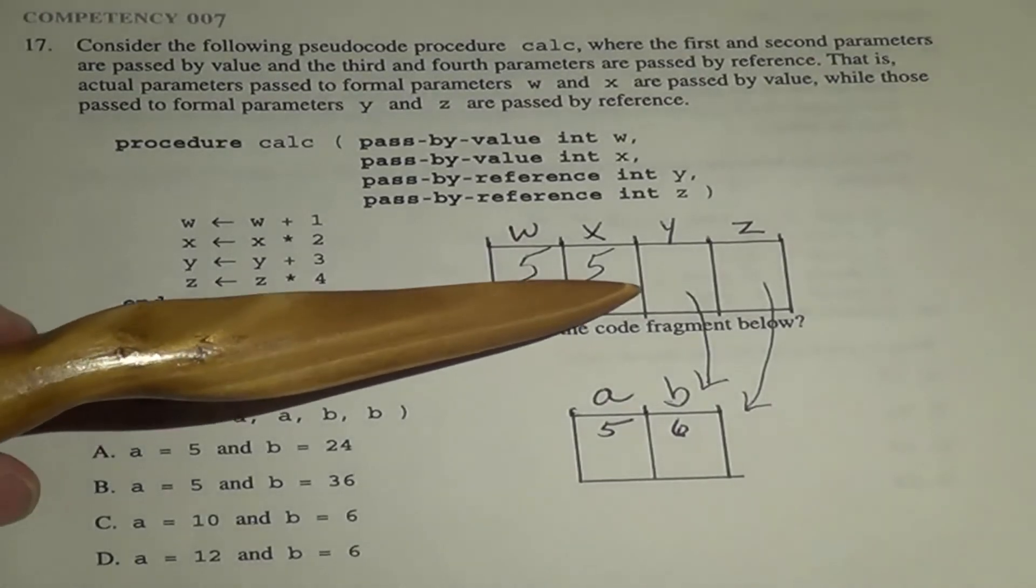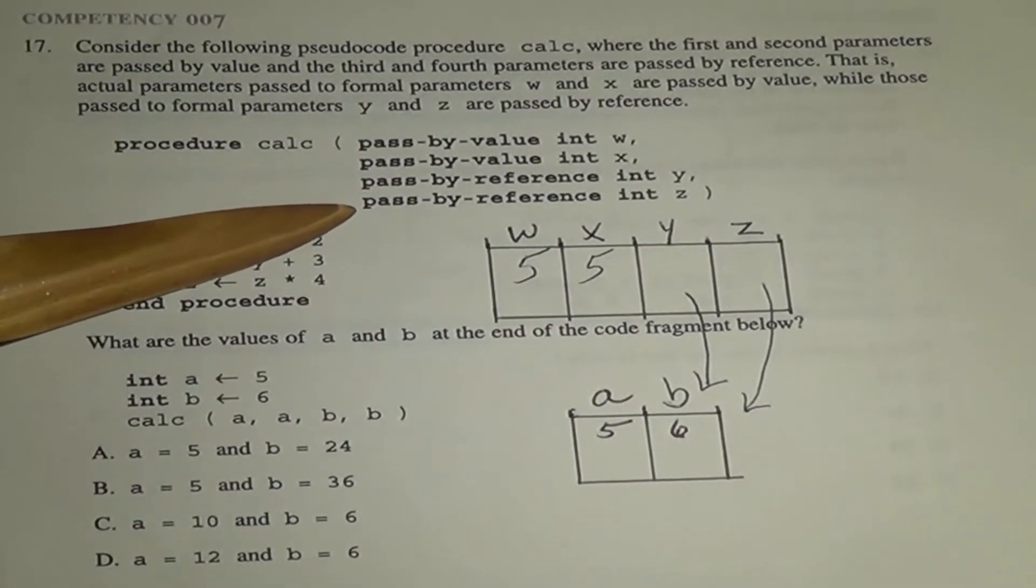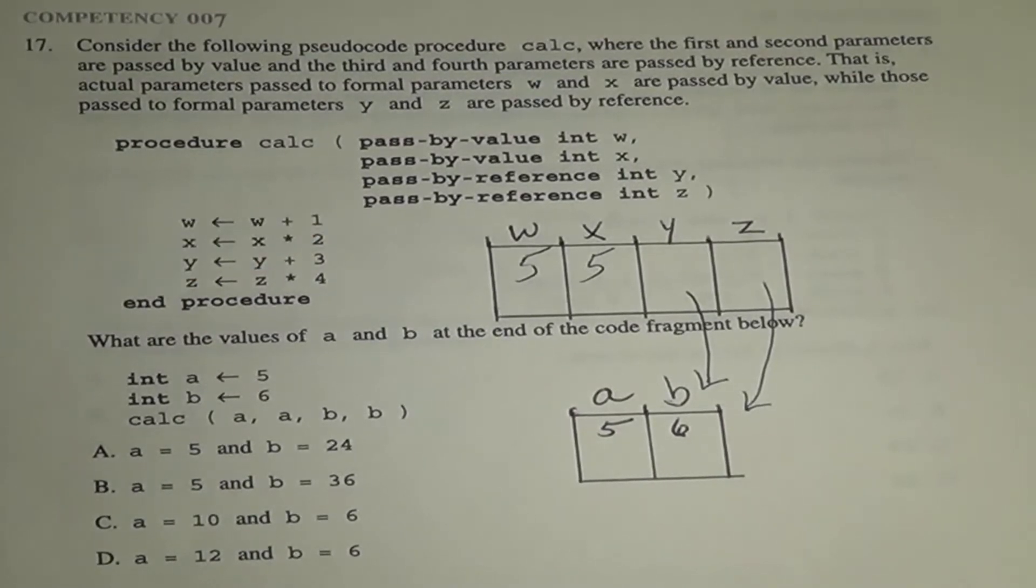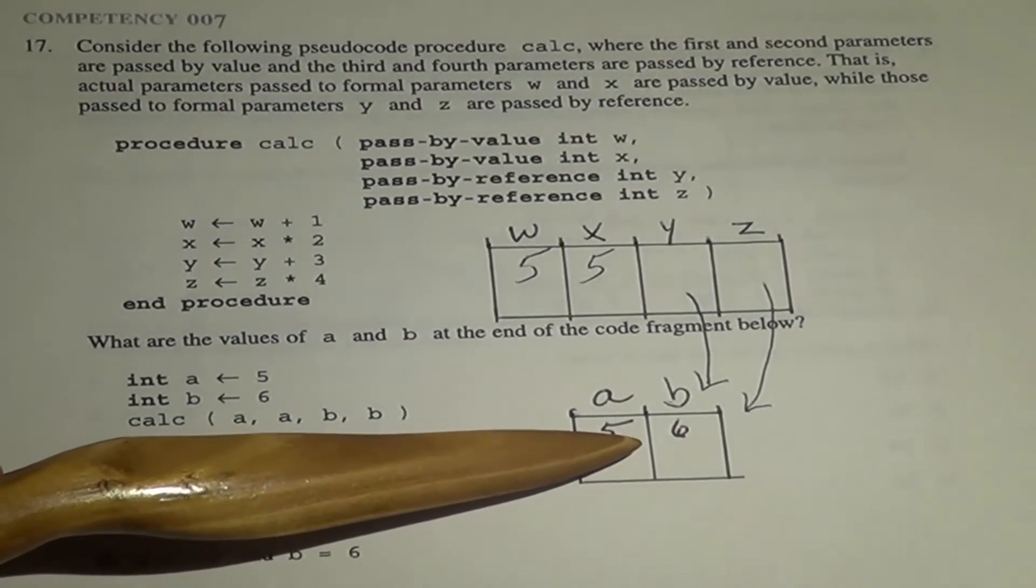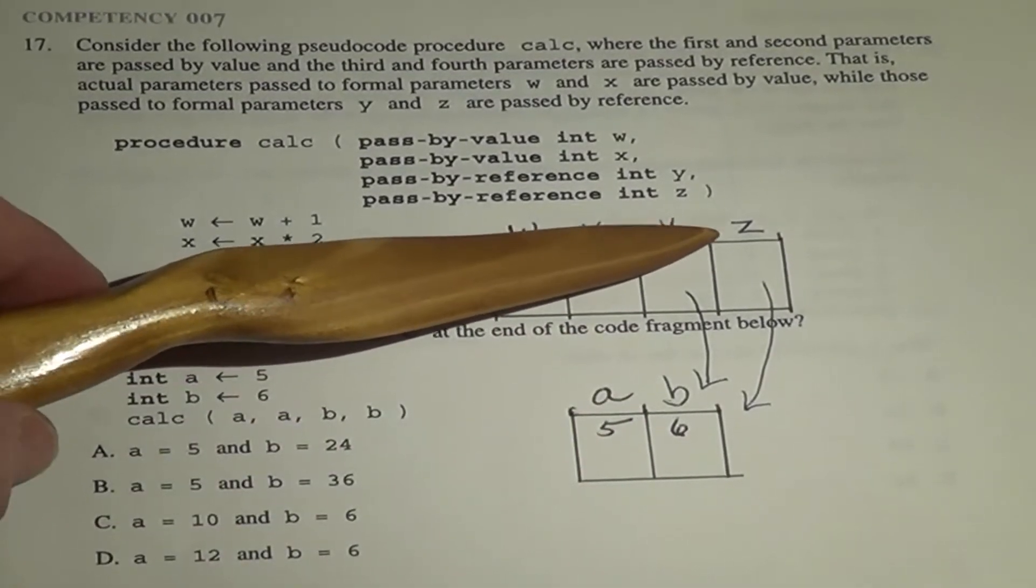And the reason we don't write the 6 here and here is because these are passed by reference. And if you remember in passing by reference, it's not the value that it's passed, it's the reference to the value, the memory location. So now, 6 is being referenced by 3 different things, B and Y and Z.